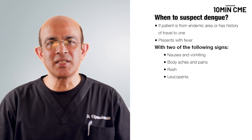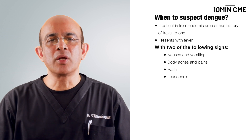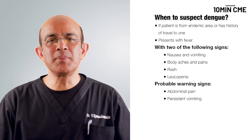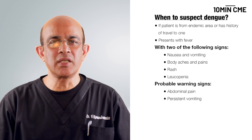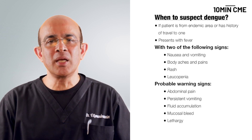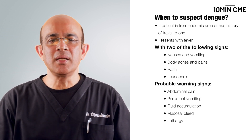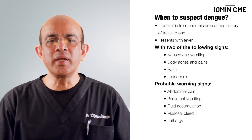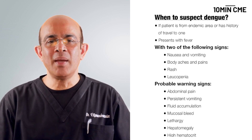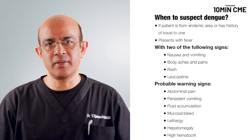body aches and pains, rash, a positive tourniquet test, or leukopenia. This may be associated with warning signs which may include abnormal persistent abdominal pain, persistent vomiting, fluid accumulation, mucosal bleed, lethargy, hepatomegaly, and laboratory signs suggestive of a high hematocrit.